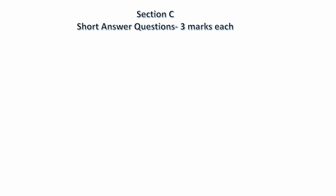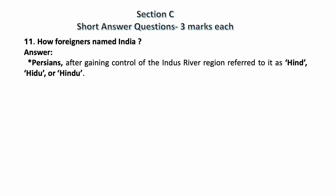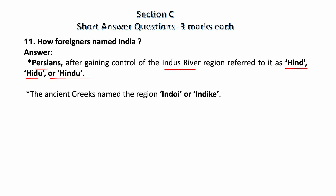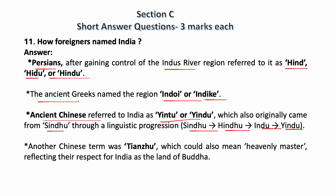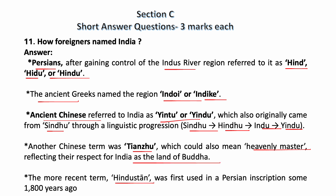Section C — short answer questions, three marks each. How did foreigners name India? Persians, after gaining control of the Indus river region, referred to it as Hind or Hindu. The ancient Greeks named the region Indus or India. Ancient Chinese referred to India as Indu, which also originally came from Sindhu through a linguistic progression: Sindhu, Hindu, Hind, Indu. Another Chinese term was Tianzhu, which could mean 'heavenly master,' reflecting their respect for India as the land of Buddha. The more recent term Hindustan was first used in a Persian inscription some 1800 years ago.